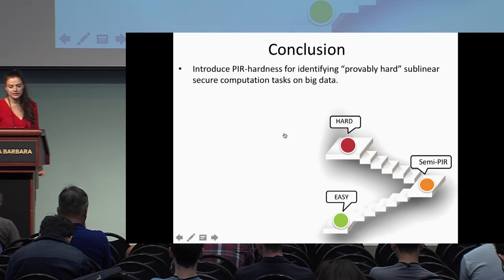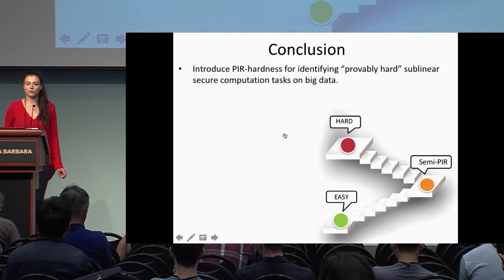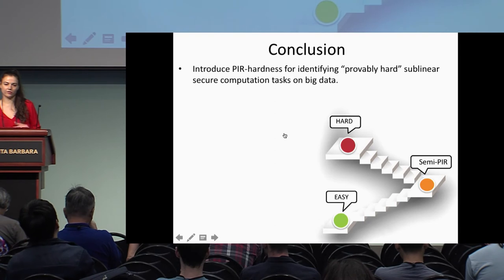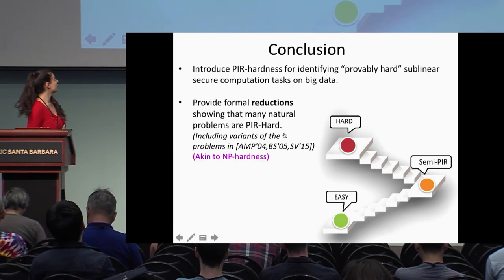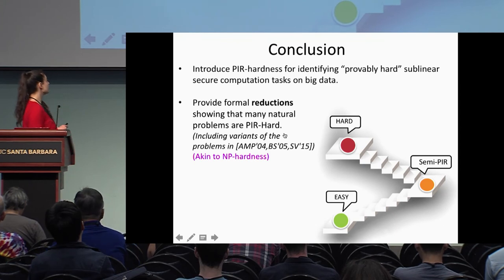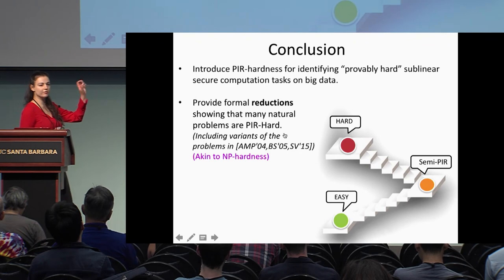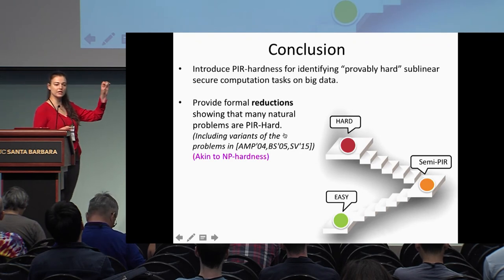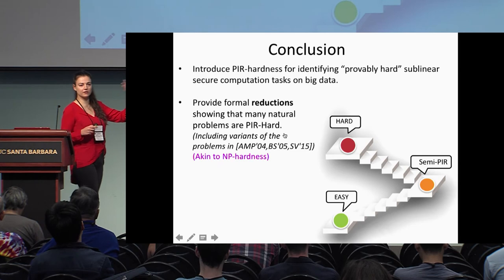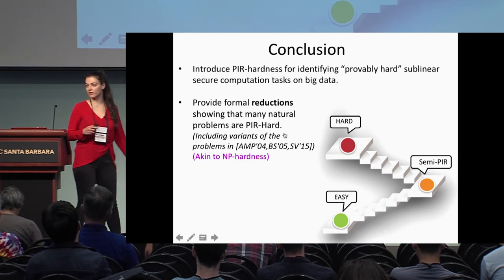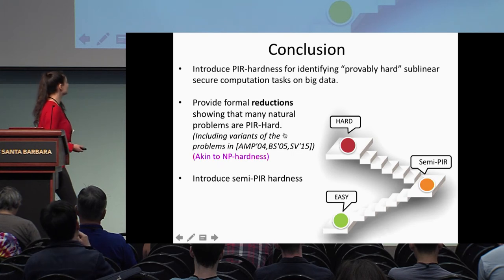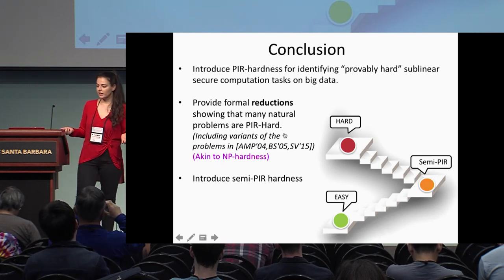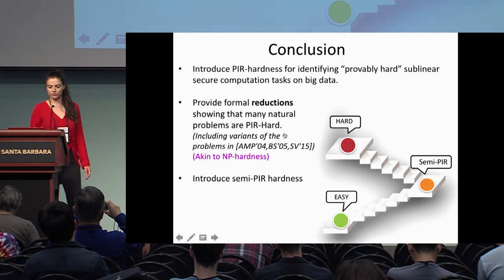To conclude, we gave a framework for classifying whether a problem is hard or easy based on PIR-hardness. We showed that some problems are PIR-hard — specifically, when we go from two-sided to one-sided functionalities, they become PIR-hard. We also introduced semi-PIR hardness, which captures the complexity of natural two-sided problems.